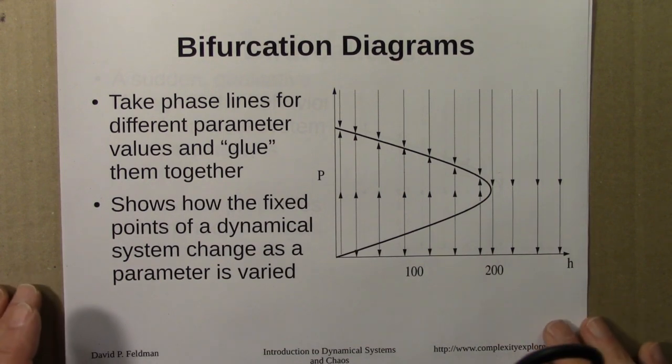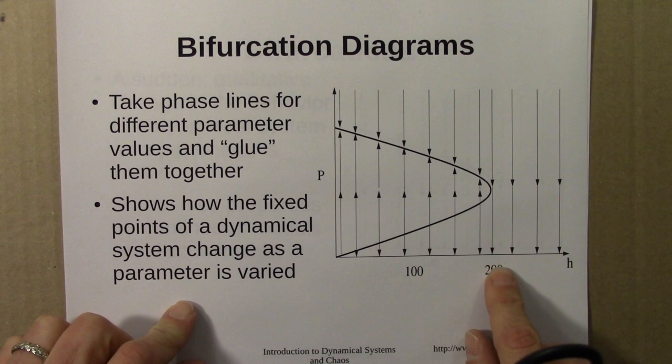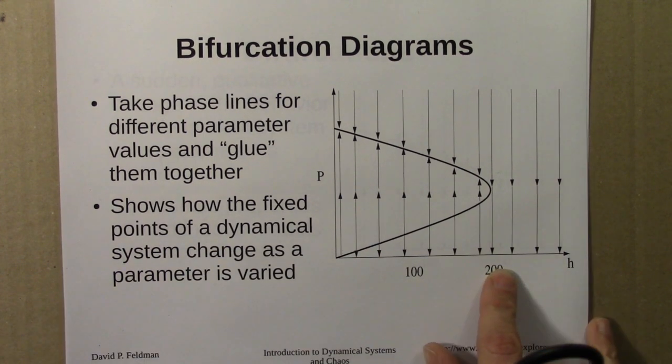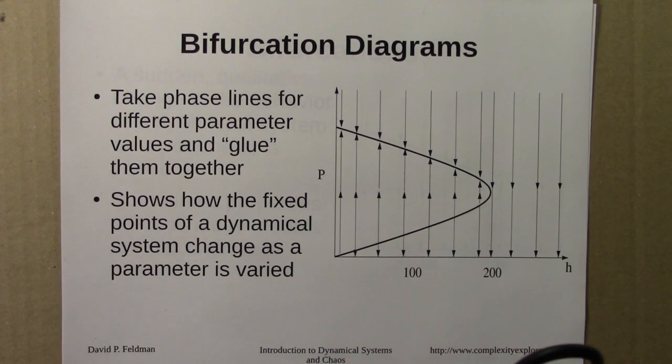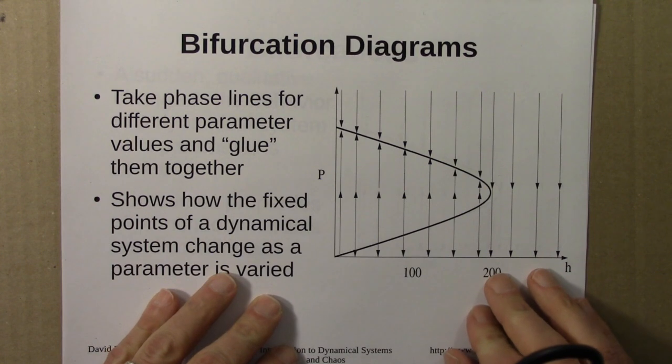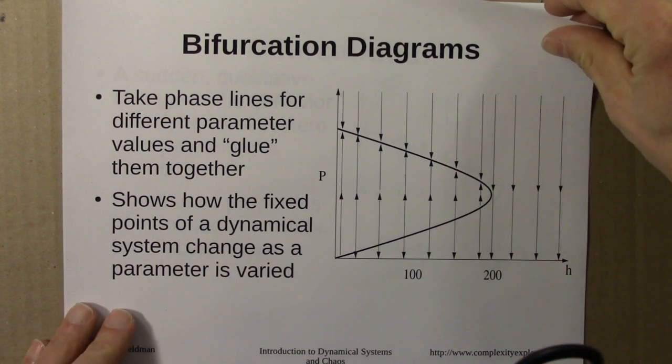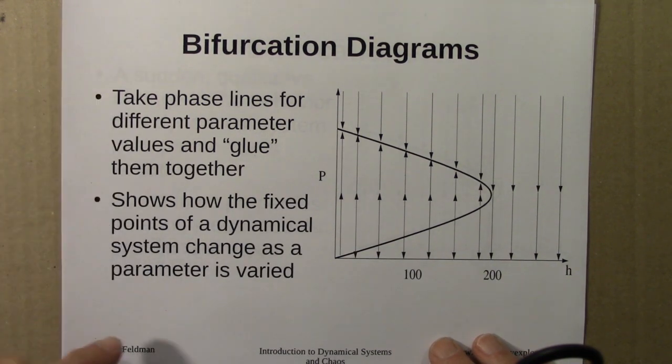Bifurcation diagrams show how the fixed points of a dynamical system change as a parameter is varied. As the parameter varies, a fixed point can change its stability or disappear altogether. Bifurcation diagrams are a very common graphical tool used in the analysis of dynamical systems. When presenting an analysis of a model, one often summarizes it with a bifurcation diagram. We'll revisit these in the next unit when we look at bifurcation diagrams for iterated function systems.